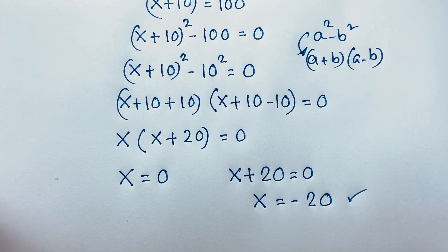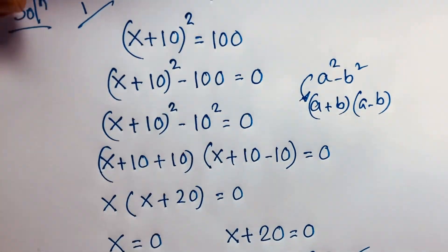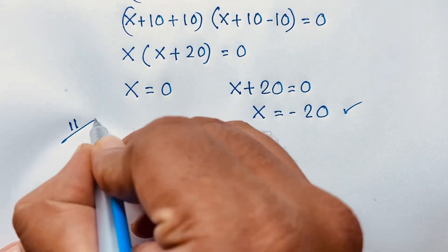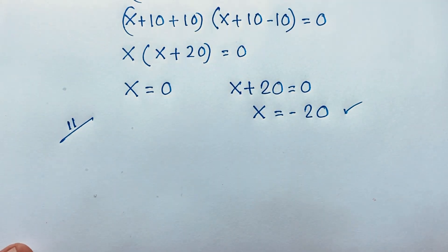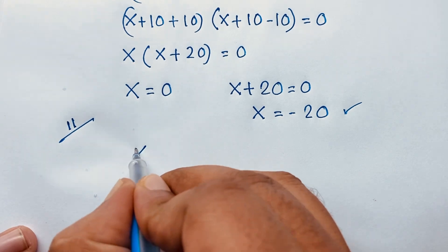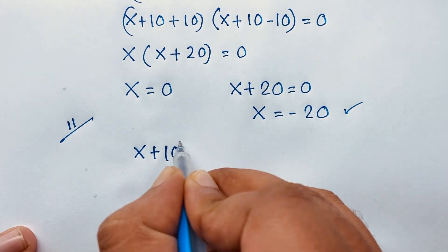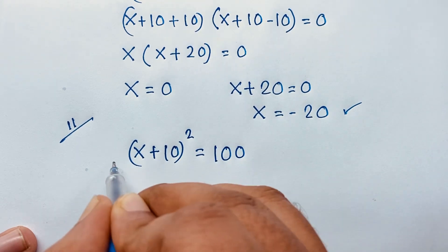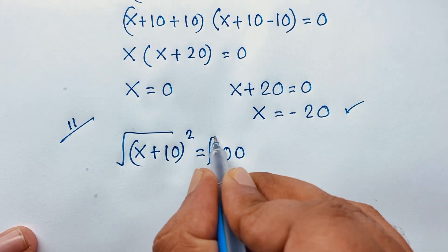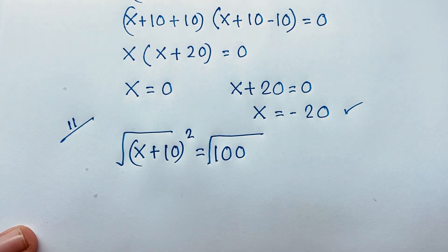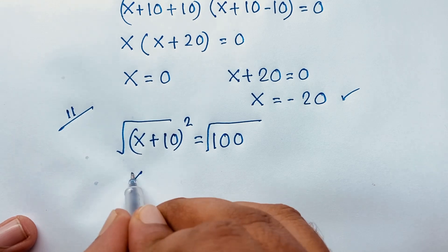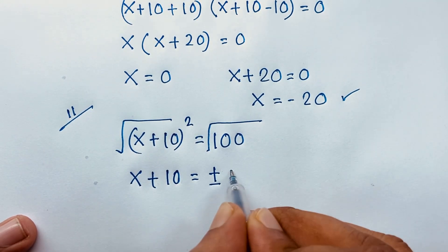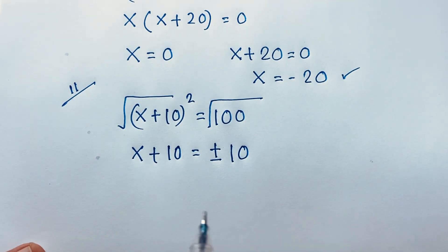So our final answer is x = 0 and x = −20. Now I solve this question using the second method. The question is (x + 10)² = 100. Now I use a square root on both sides.